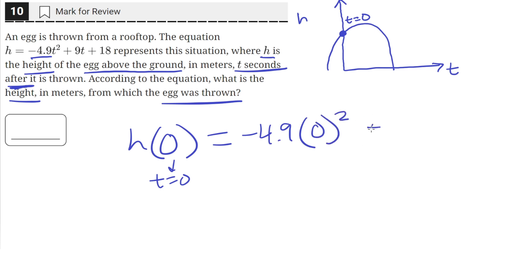Zero squared is zero, and zero times negative 4.9 is still zero, so this is just zero. Nine times zero is still just zero, so we're just left with 18. So at t equals zero, the height is 18 meters. So the egg was thrown from 18 meters in the air.